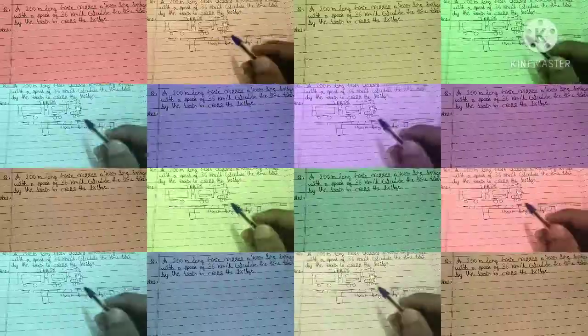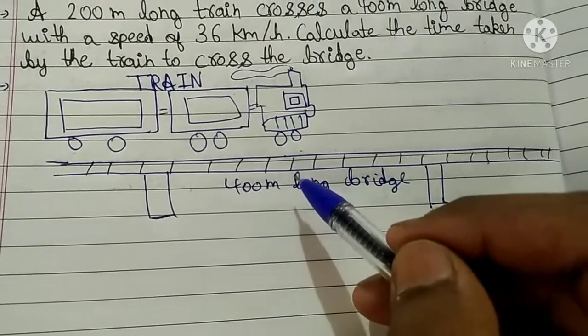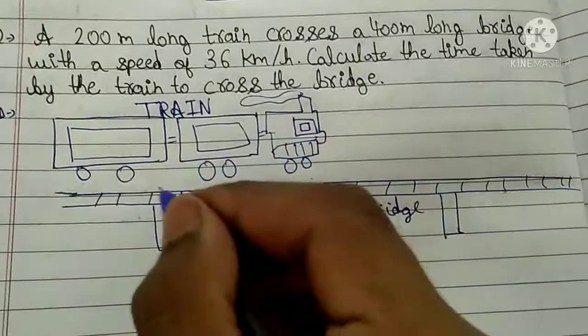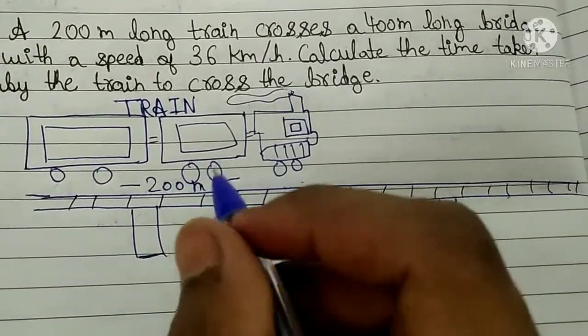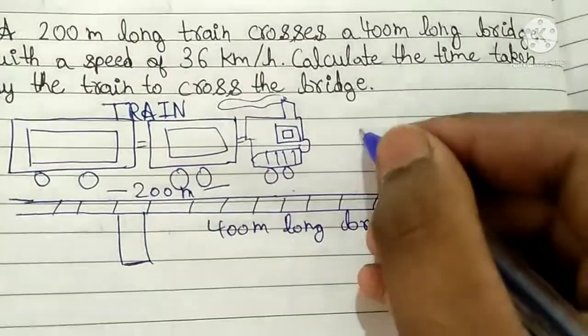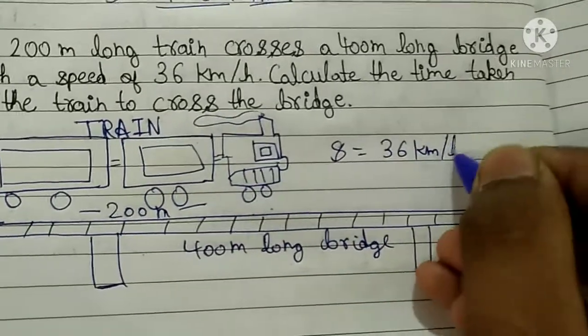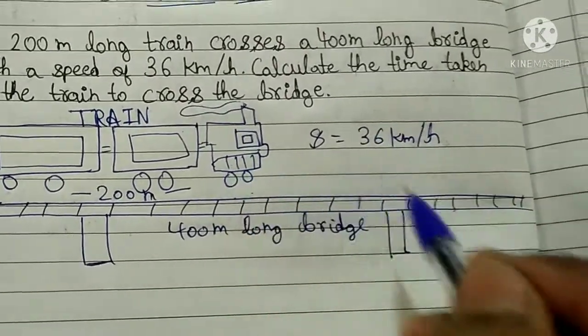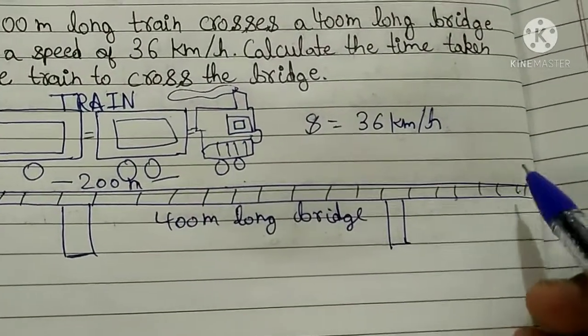Let's solve it with a diagram. This is our train and this is a 400 meter long bridge. Our train's total length is 200 meters. The train crosses this 400 meter bridge with a speed of 36 km per hour. The question is asking us to find out how much time this train will take to cross the bridge.